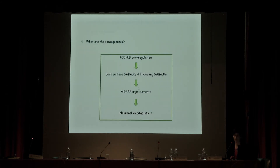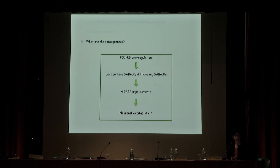In conclusion, we found at least two mechanisms by which protocadherin-19 affects GABAergic currents: regulating the number of receptors on the surface, and regulating their kinetics. Since GABAergic conductance — in particular the tonic current — is important for neuronal excitability, we decided to look at neuronal excitability.